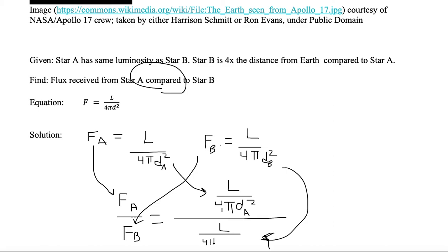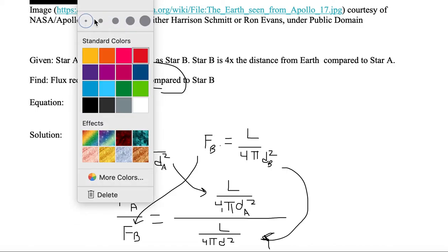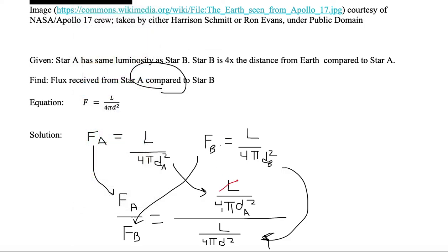And then what we do is we eliminate like variables. Let's get our pen out. Luminosity is the same and 4π is the same, so we can eliminate both.